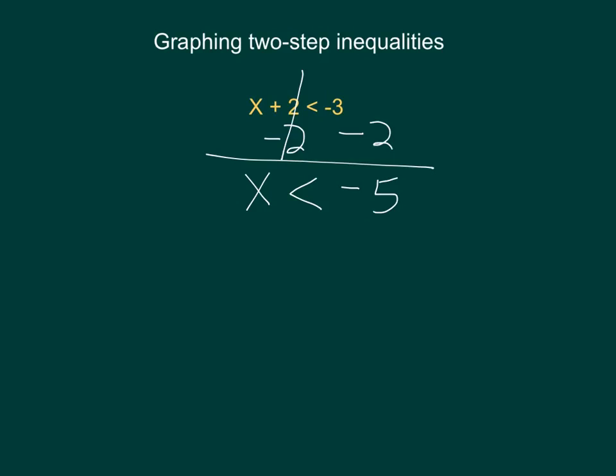Now, we just need a number line and we'll have the negative 5 in the middle and a couple numbers on each side for reference.